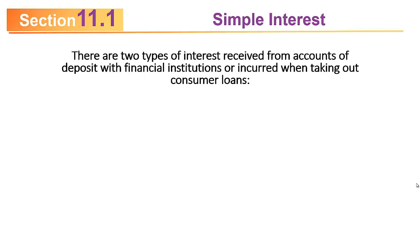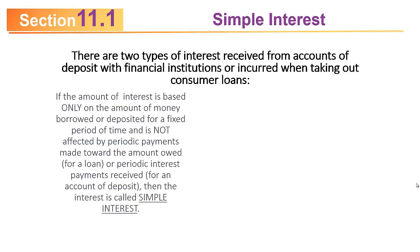There are two types of interest received from accounts of deposit with financial institutions or incurred when taking out consumer loans. If the amount of interest is based only on the amount of money borrowed or deposited for a fixed period of time and is not affected by periodic payments made toward the amount owed or borrowed, then the interest is called simple interest.